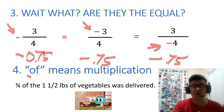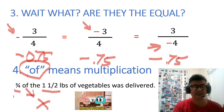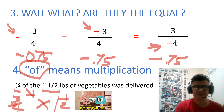Whenever you see the word 'of' in word problems — for example, '3 fourths of the 1 and a half pounds of vegetable was delivered' — that 'of' means you have to multiply them. So that's going to be 3 fourths times 1 and a half.